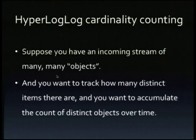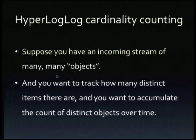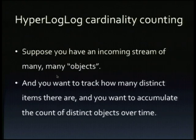Suppose you want to count the cardinality — the number of unique object types — in an incoming stream of many billions of objects, accumulating the count of distinct objects over time. One example is detecting denial-of-service attacks: a DDoS might be characterized by many, many individual IP addresses attacking you, or alternatively a very small set of IP addresses with massive traffic. You'd want to say: we're getting a lot of individual IP-level traffic, or very few source hosts — both suspicious. And you don't want to allocate a lot of memory to count these things.